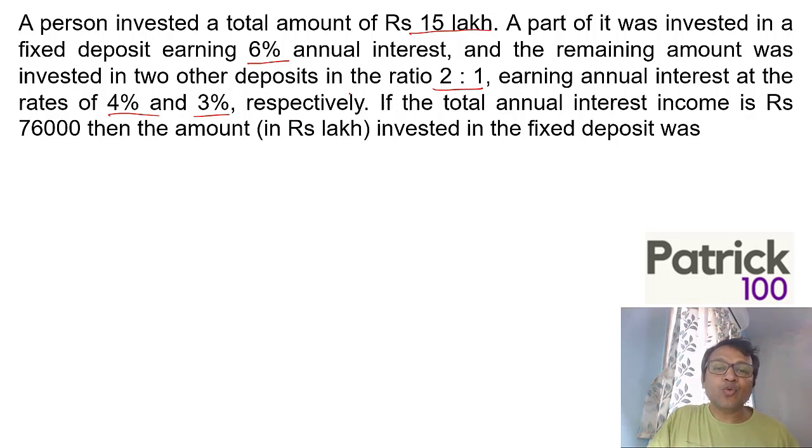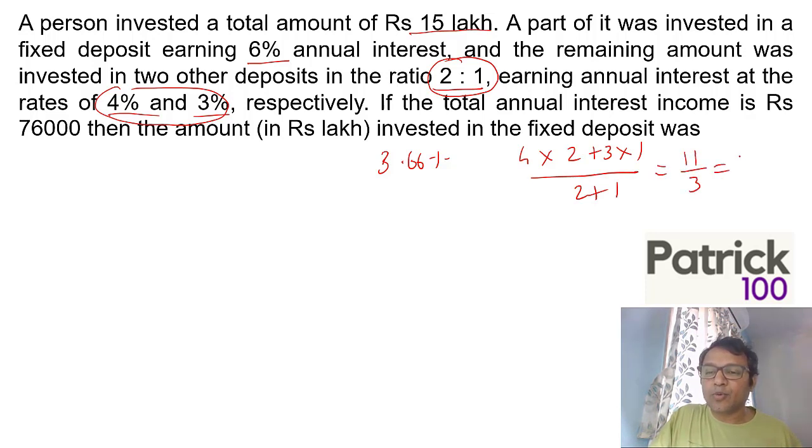To use allegation I want two values here, but it's a mixture of three values. So I'll combine this 2:1 ratio of 4% and 3% by the weighted average approach. The average of 4 and 3 in a ratio of 2:1 is 3.66%, or you can use the weighted average: 4×2 + 3×1 upon 2+1 = 11 upon 3 = 3.66%.